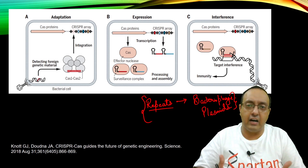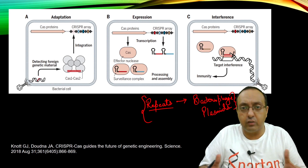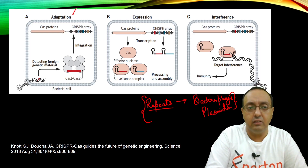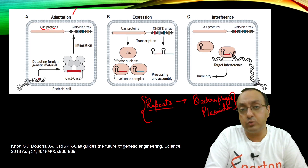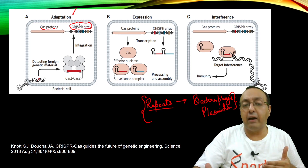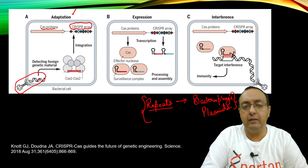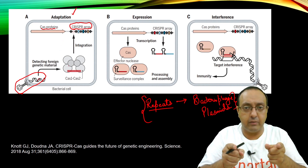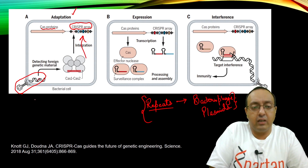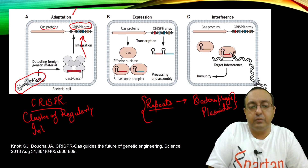With more and more research, it was discovered that these repeats formed an immune system for bacteria — they kept a record of previous bacteriophage and plasmid infections. CRISPR stands for Clustered Regularly Interspaced Short Palindromic Repeats, in line with the observations made in that 1987 paper. The overall process of CRISPR-Cas9 for bacterial immunity involves three phases: adaptation, expression, and interference.